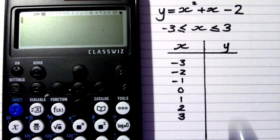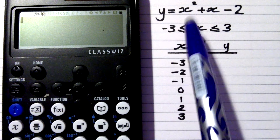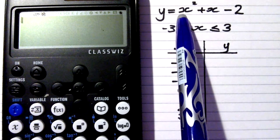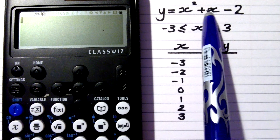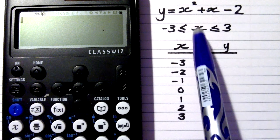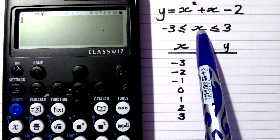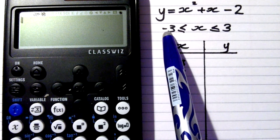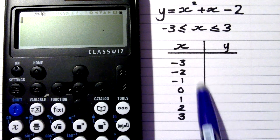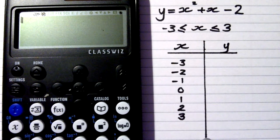The function that we're going to be looking at is y equals x squared plus x minus 2. And we're going to be looking at values of x between negative 3 and 3. I've prepared a table here for me to fill in.